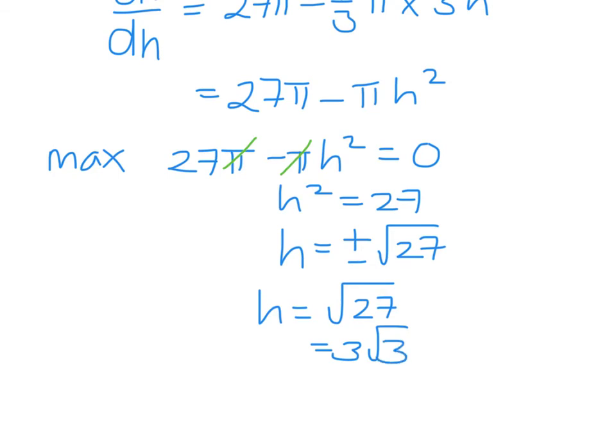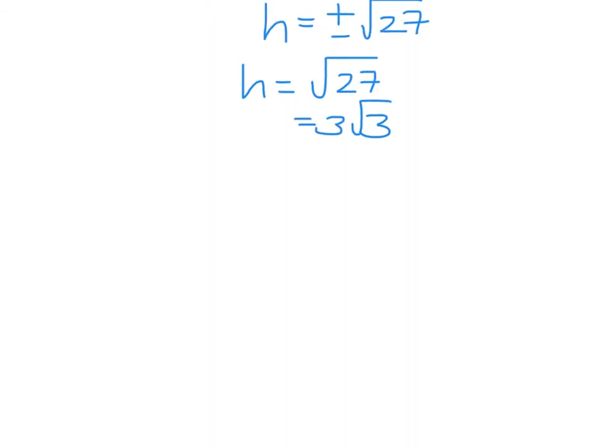If we go back to when we use Pythagoras, 81 equals h squared plus r squared. So 81 will equal 27 plus r squared. r squared is 81 minus 27, so that is 54.